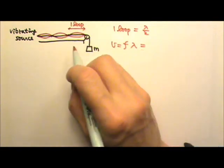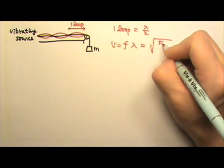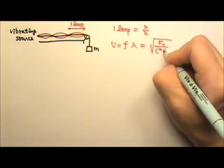The speed for a wave on a string is also the square root of the tension divided by the mass per unit length.